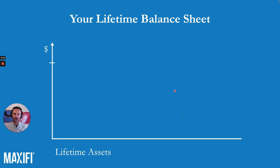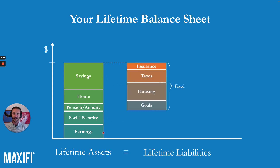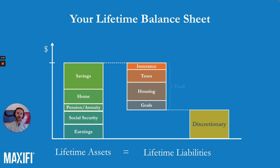Let's take a look at a hypothetical lifetime balance sheet. Unlike a traditional balance sheet, the lifetime balance sheet not only includes your current assets — things like savings in taxable investment accounts, retirement accounts, and your home if you have one — but it also includes any future income you expect, such as pension and annuity income, social security benefits, and any earnings if you're still working. The right-hand side of the balance sheet covers your lifetime liabilities. Maxify breaks this into two components: the first is your fixed spending — things like insurance, taxes, spending on housing, and any goal-related expenditures. After accounting for these expenses, the lifetime balance sheet solves for what is left over for your discretionary spending.